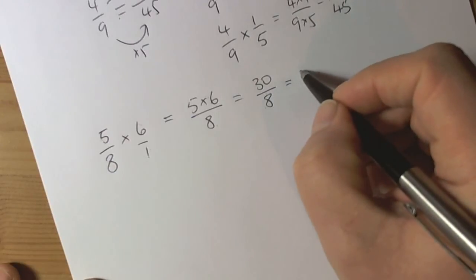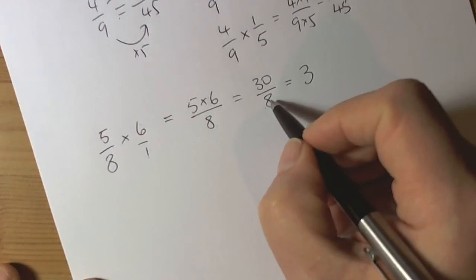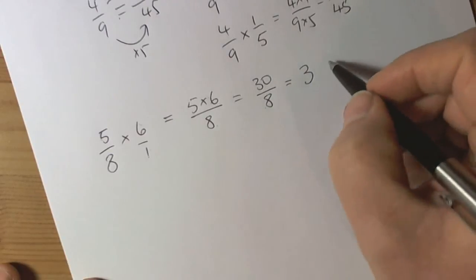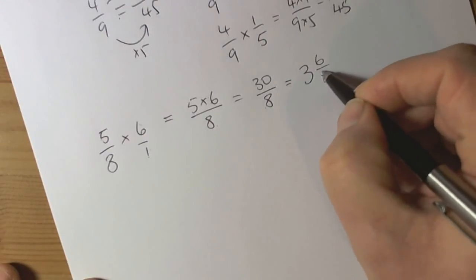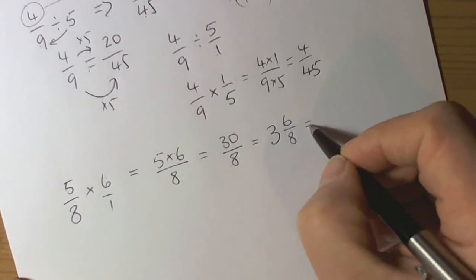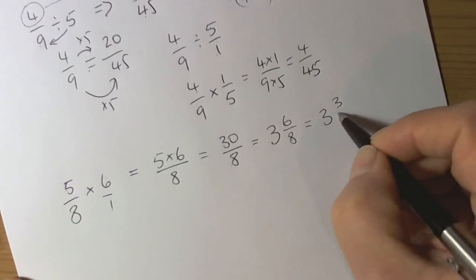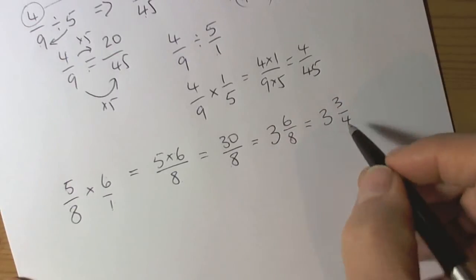So 30 over 8, it cancels down. So 8 to 30 is 3 eighths of 24. So it's going to be 3 whole ones. And 3 eighths of 24. Take that away from 30, leaves us with 6. So 6 eighths. But then we realize that 6 and 8 both have a factor of 2. So we end up with dividing that by 2, 3, dividing that by 2, 4. So the final answer will be 3 and 3 quarters.